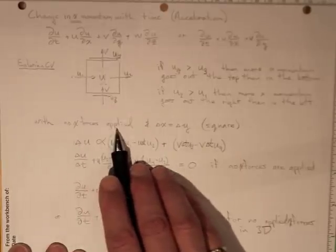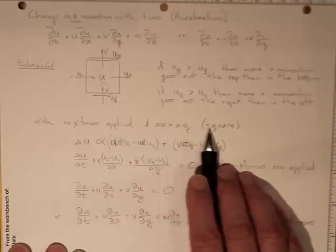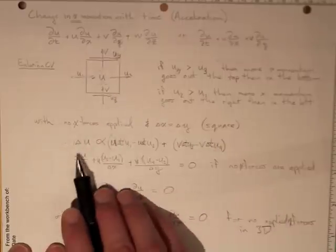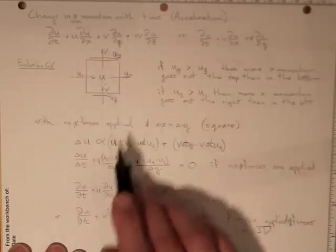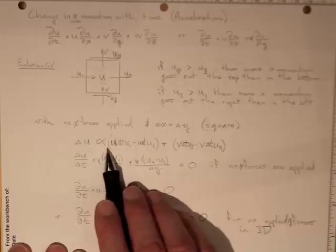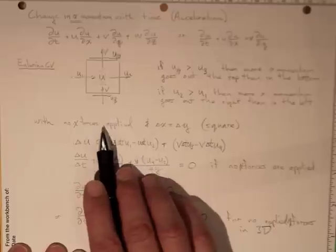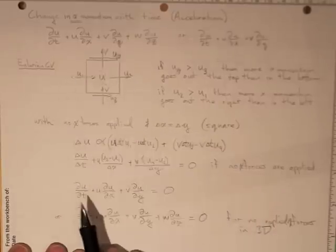And if there are no forces applied in the x-direction, and delta x is equal to delta y because the control volume is square, then the change in the momentum inside the volume is going to be proportional to the difference between what goes out the top, what comes in the bottom, what goes out this side, and what came in that side.